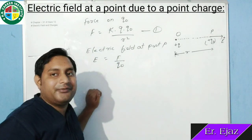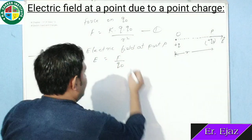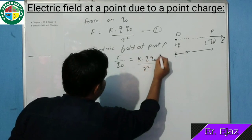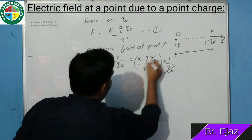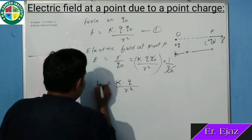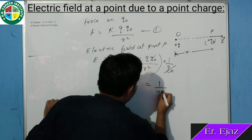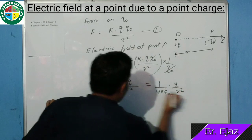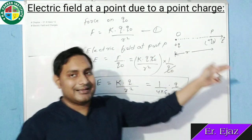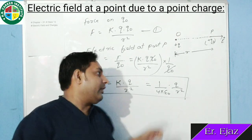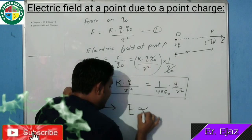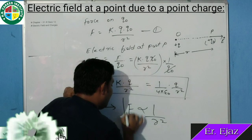Last class में electric field क्या होता है — force experienced by a unit positive test charge. तो F की value first equation से put करोगे: K Q Q naught upon R square, into 1 upon Q naught. Q naught cancel हो जाएगा। तो हमारे पास आता है K Q upon R square। यह electric field का expression हुआ। K की value 1 upon 4π epsilon naught है, तो E = 1 upon 4π epsilon naught into Q upon R square। Electric field inversely proportional है square of distance के।